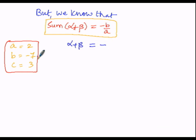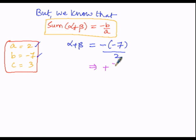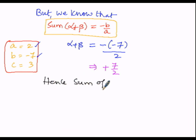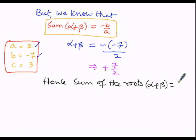Substituting: alpha plus beta = minus (−7) divided by 2. Minus of minus is plus, so we get 7 by 2. Hence, the sum of the roots, alpha plus beta, is equal to 7 by 2.